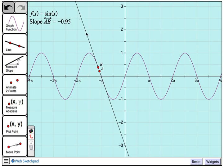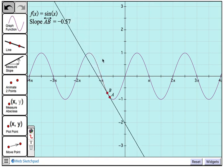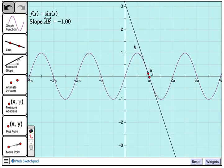So now we see the slope of line AB right here. And if I drag the line, as I did before, we can see how the slope value changes.